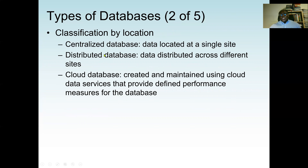We also have classification by location. A centralized database means the database is located in only one single site — for example, a bank with 20 branches in the U.S. with its headquarters in New York may have only one single database in New York. A distributed database means each branch has its own database, but all these database systems are connected together so they can access each other. Then we have the cloud database, which uses cloud computing services that provide defined performance measures for the database.